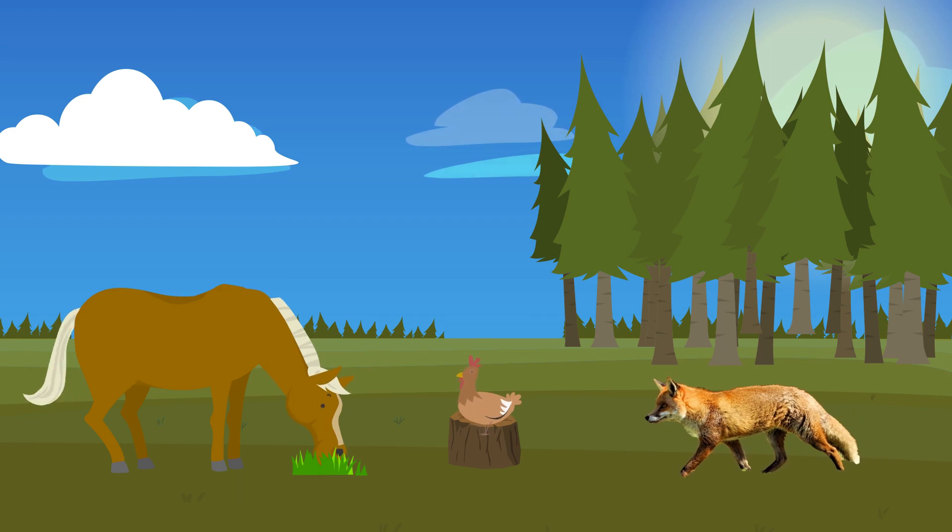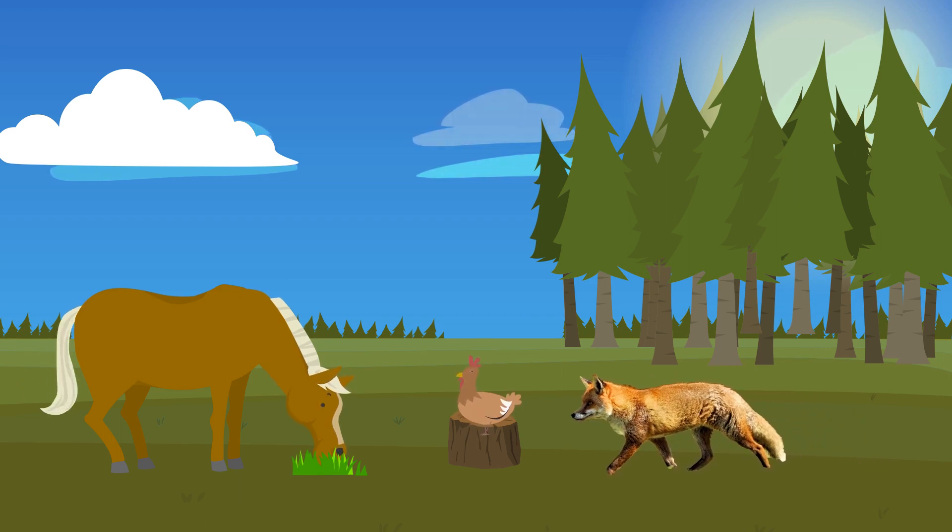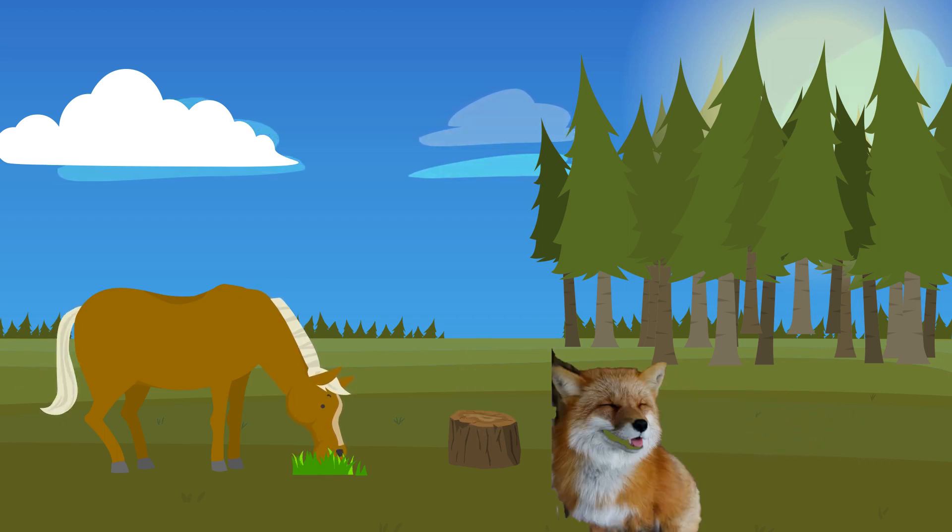While the donkey cropped a fresh bit of greens, the fox would devour a chicken from the neighboring farmyard or a bit of cheese filched from the dairy.